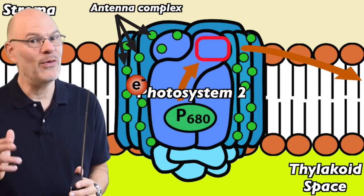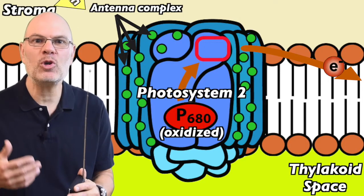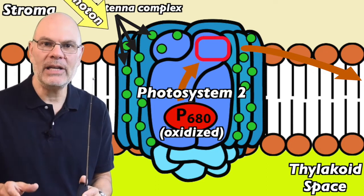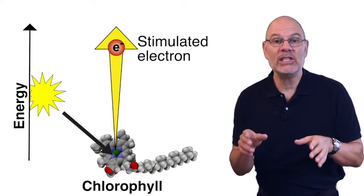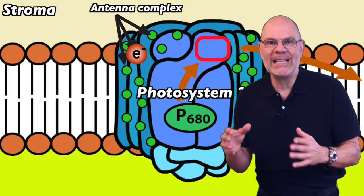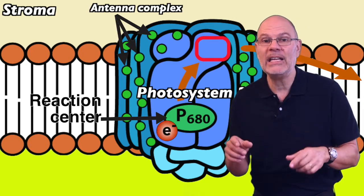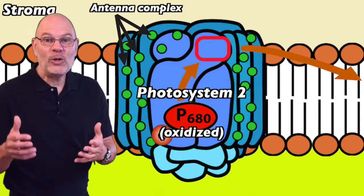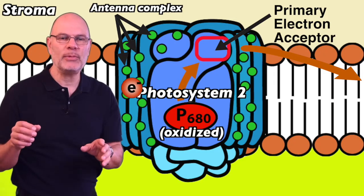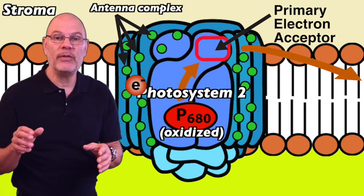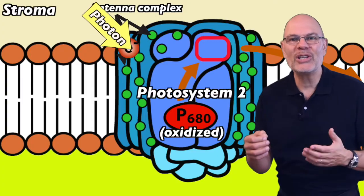Zooming in on photosystem 2 — which is the first photosystem — photons stimulate chlorophyll molecules organized into an array called an antenna complex. When a photon hits a chlorophyll in the antenna complex, it stimulates the electrons in that chlorophyll's magnesium atom. Eventually, the stimulated electron gets to what's called a reaction center, a pair of chlorophyll molecules called P680, named for the wavelength 680 nanometers that most strongly stimulates them. P680 is positioned so that when its electrons get boosted, they come into the vicinity of a primary electron acceptor — molecules that grab boosted electrons away from the chlorophylls in P680, leaving P680 in an oxidized state.